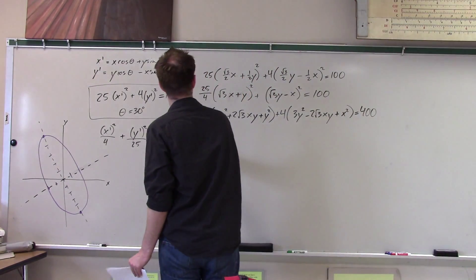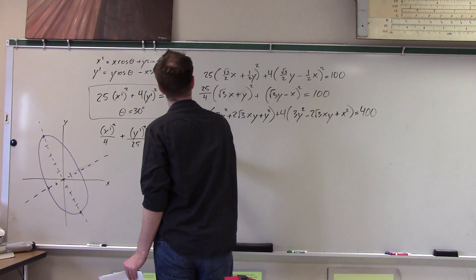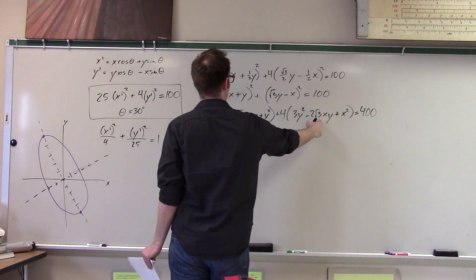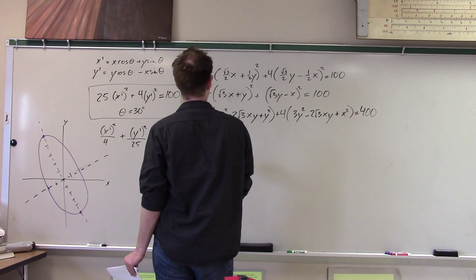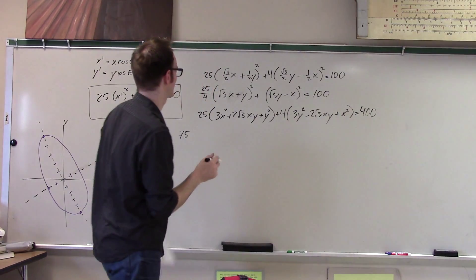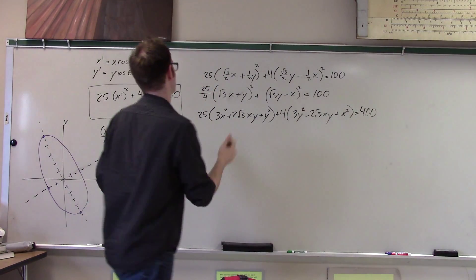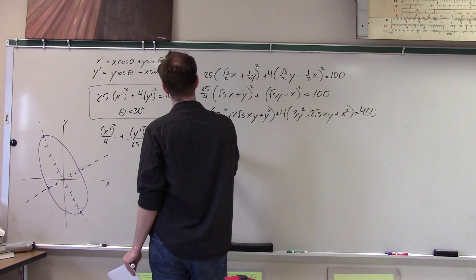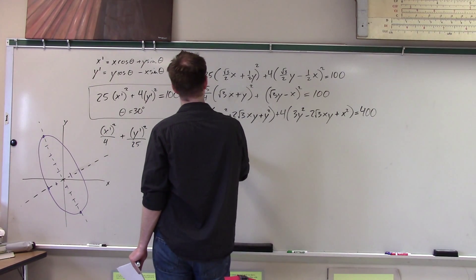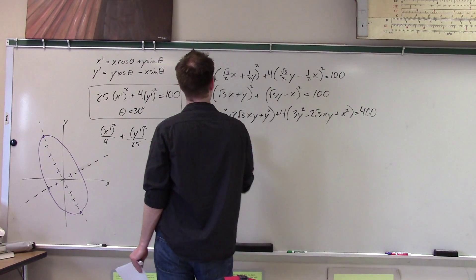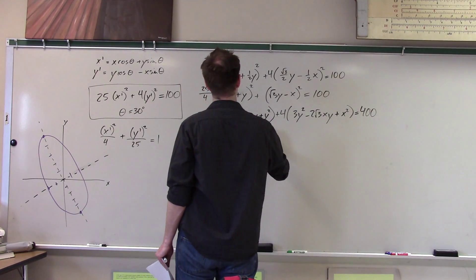Okay, and now just continue to multiply everything out. So 75... Notice I have these annoying xy terms, but I think they're about to cancel, right? No, they don't look like they're going to cancel, do they? Oh no, they're not going to cancel. That's the whole point. So I get 75x squared plus 50 root 3 plus 25y squared.